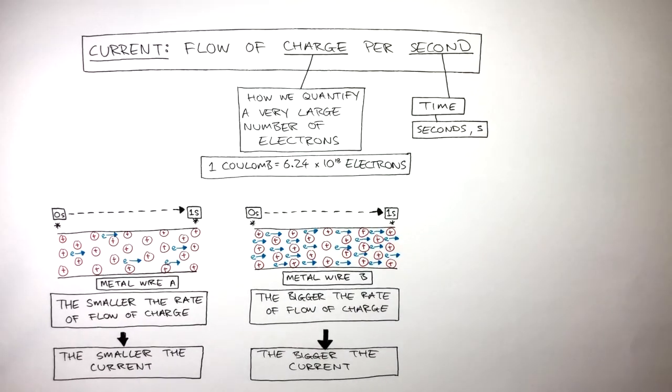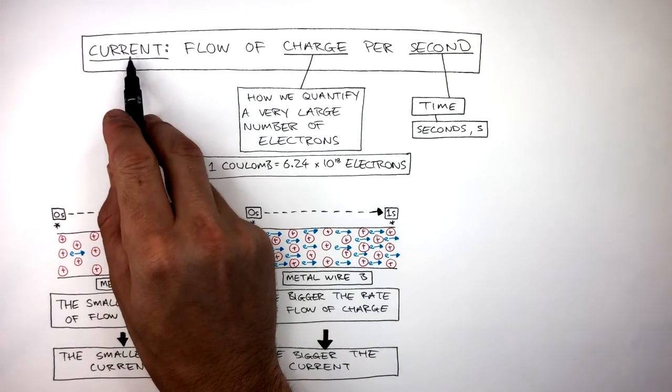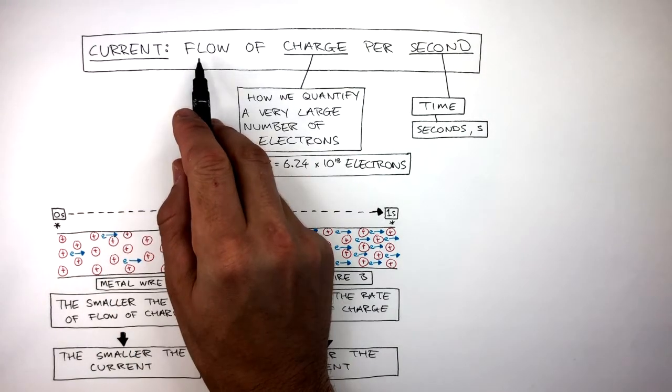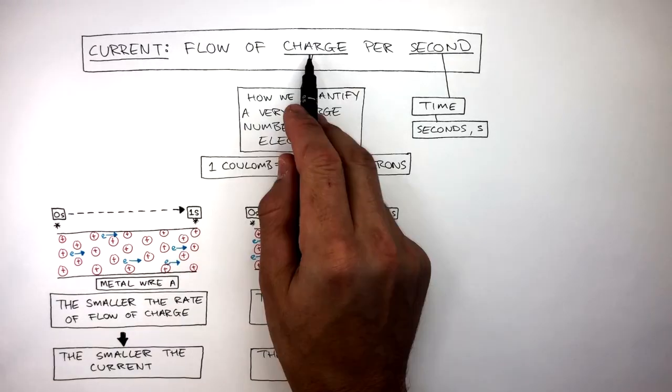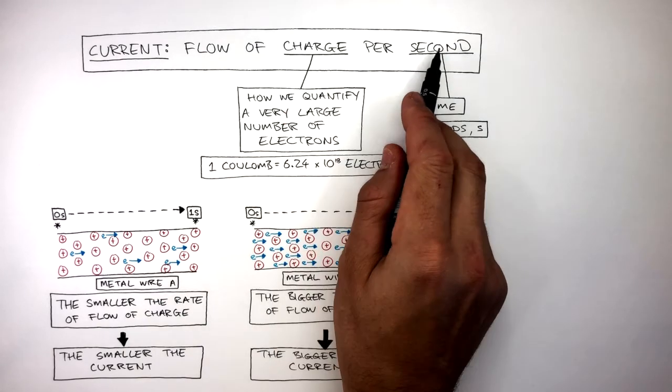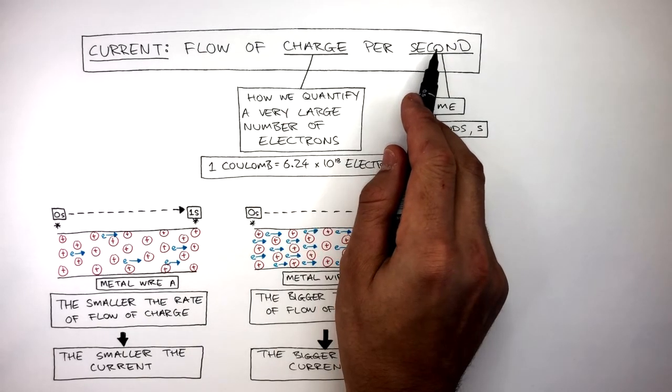So if we go back to the definition of current, current is the flow, flow means movement, of charge, charge means a very large number of electrons, measured in Coulombs, per second, in a given amount of time.